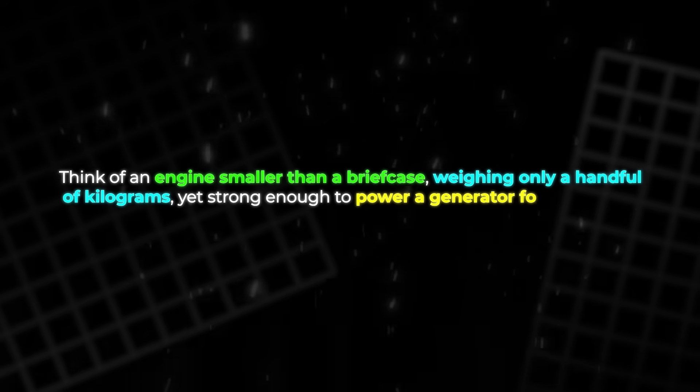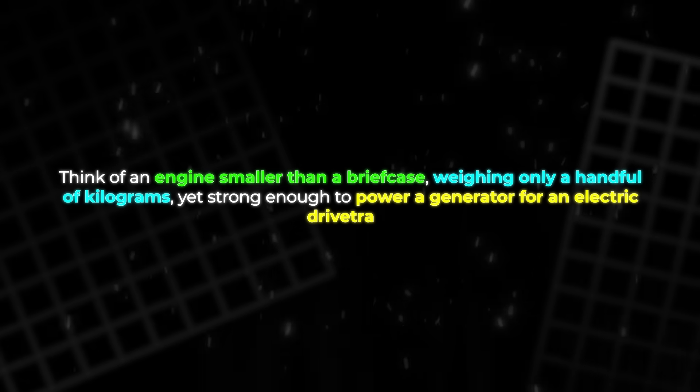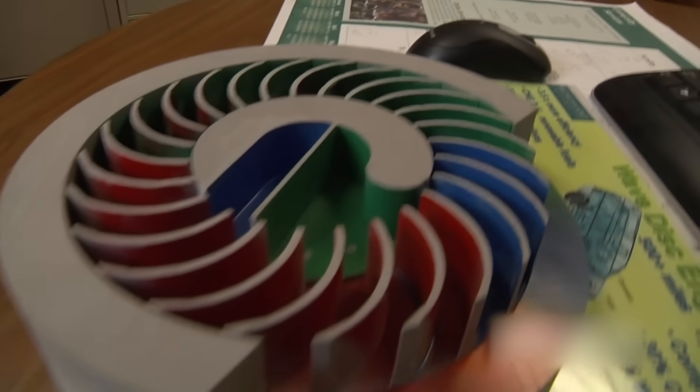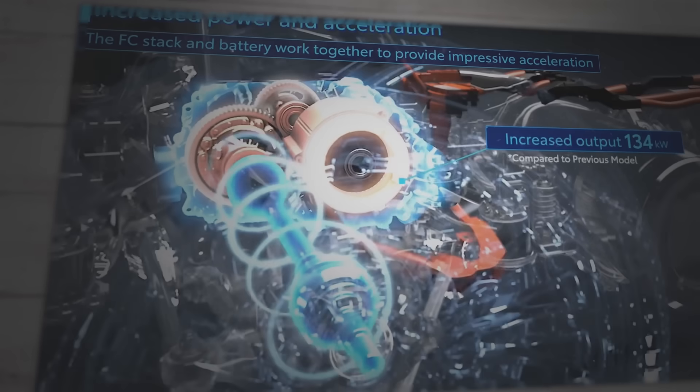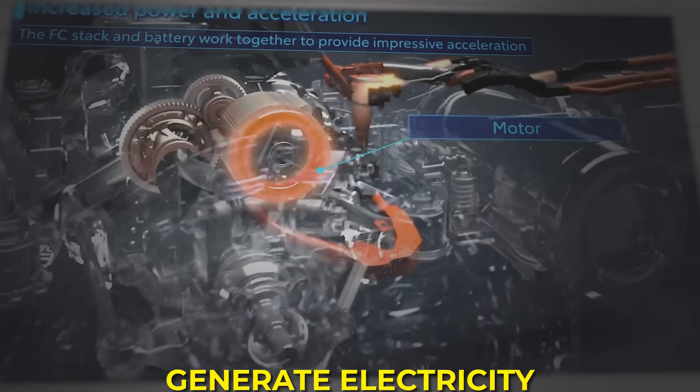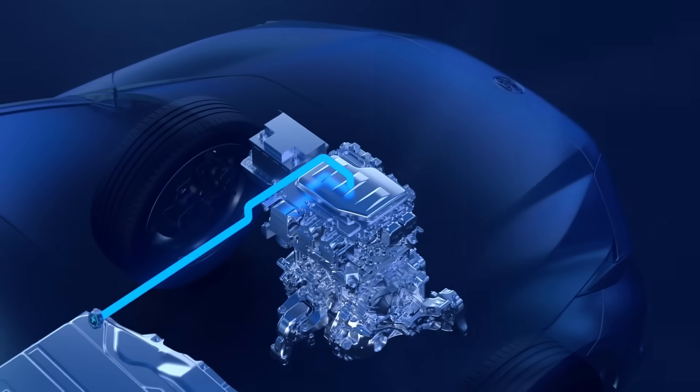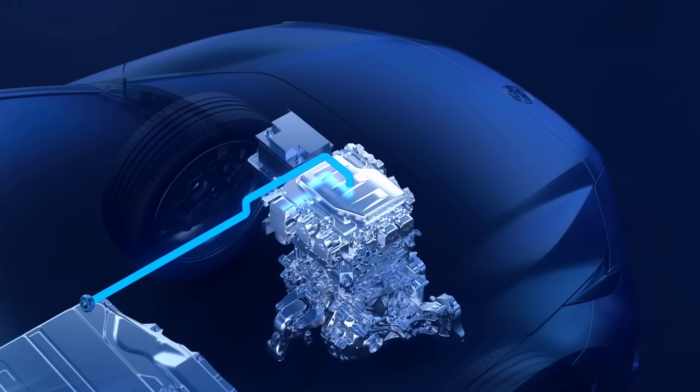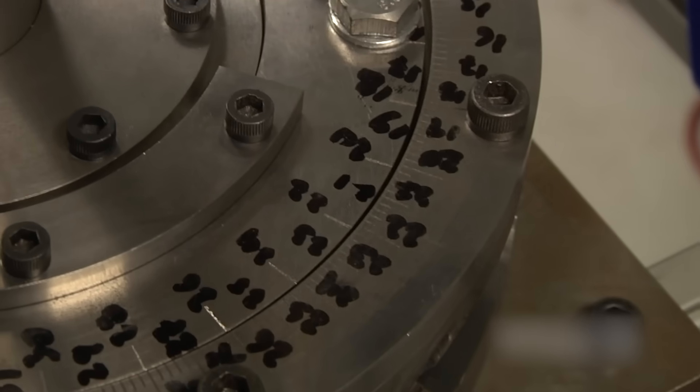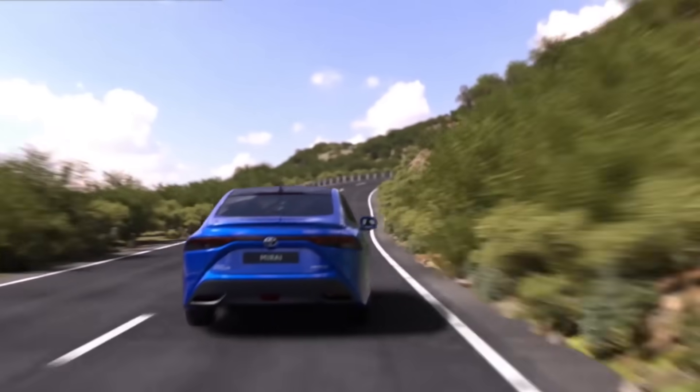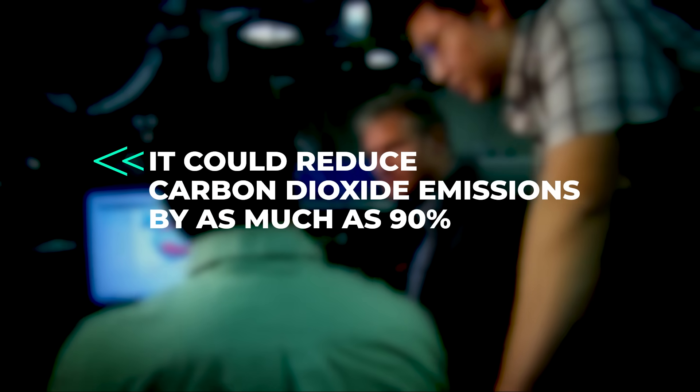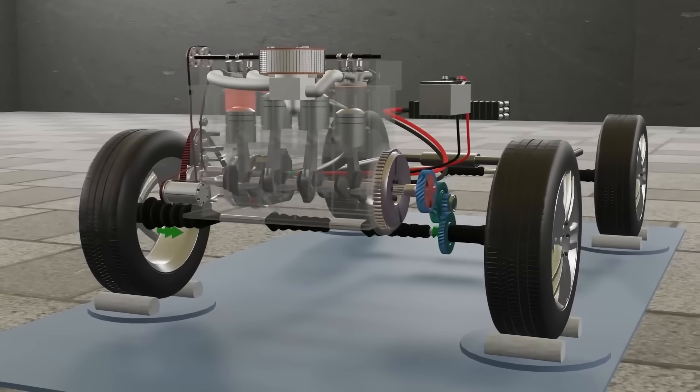And it did all this with almost no moving parts. It proved that gas dynamics alone could replace some of the most complex engine design mechanisms. It challenged the idea that pistons were essential. It showed that combustion could happen in a cleaner, faster, sleeker way. Why this engine could have changed everything. The wave disc engine was not just efficient, it was compact. One prototype intended for hybrid cars was about 20 percent the size and weight of a similar piston engine.